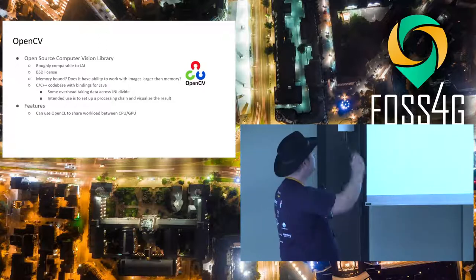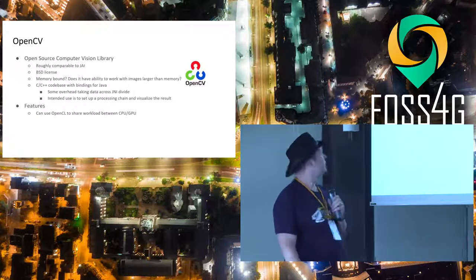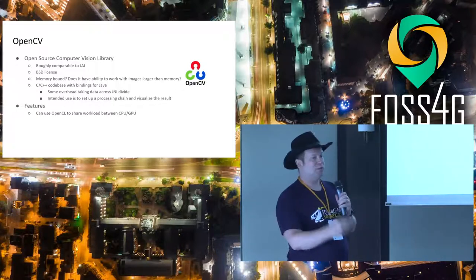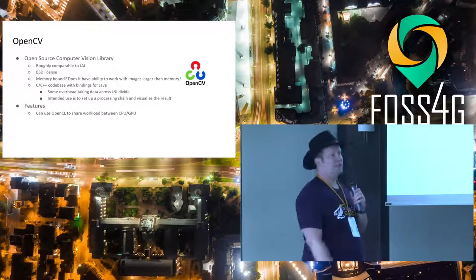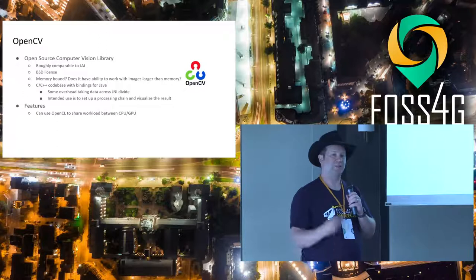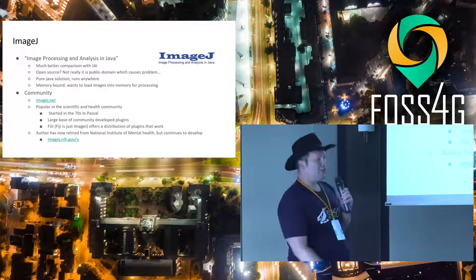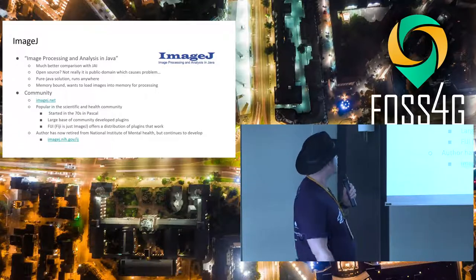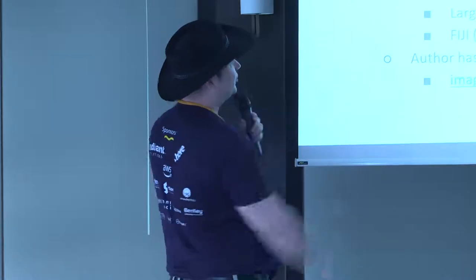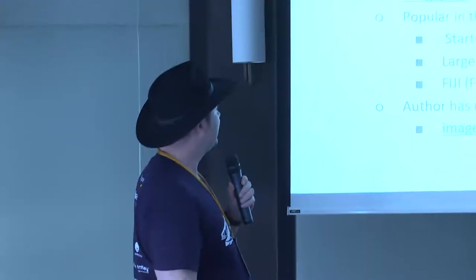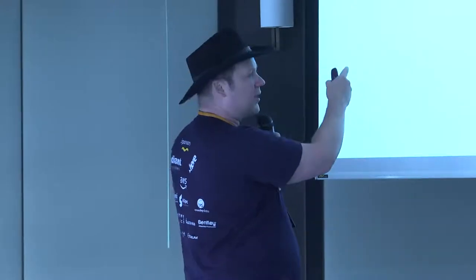So how the heck are we going to keep GeoServer going? We shopped around. OpenCV is roughly comparable to JAI with a BSD license, but it's a C++ code base and many of our customers like working in a pure Java environment. ImageJ — this looked much better, but sadly it's kind of abandoned. The project started in the 70s, written in Pascal, so something even older than GeoTools. We also looked at Apache Commons Imaging — sadly it never even reached version one, with a last release in 2009.